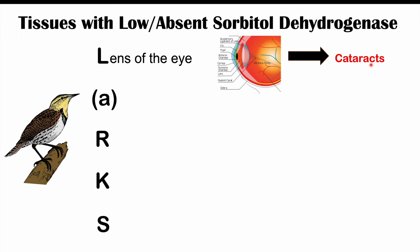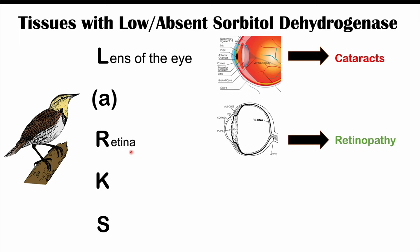The R in LARKS stands for the retina. The retina also has very low or absent sorbitol dehydrogenase. Activation of aldose reductase leads to sorbitol buildup, which through its osmotic effects damages the retina, causing retinopathy — termed diabetic retinopathy in diabetic patients.